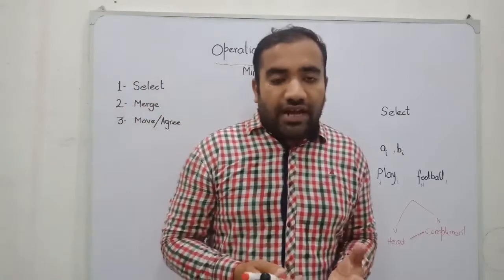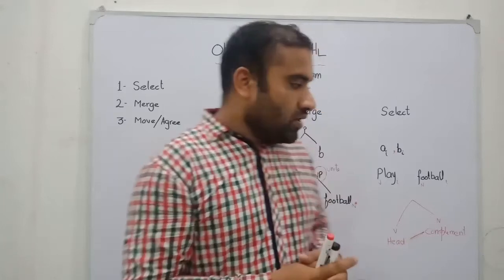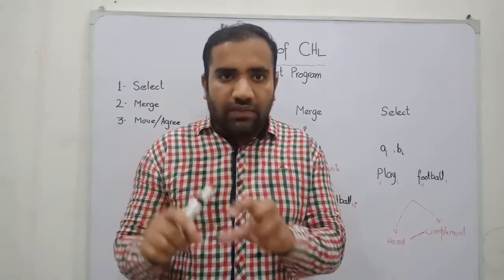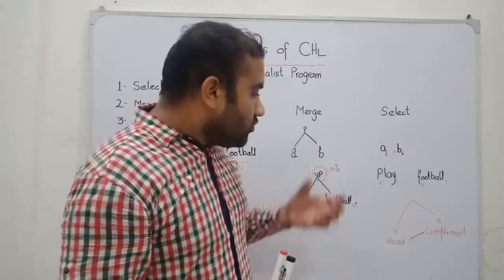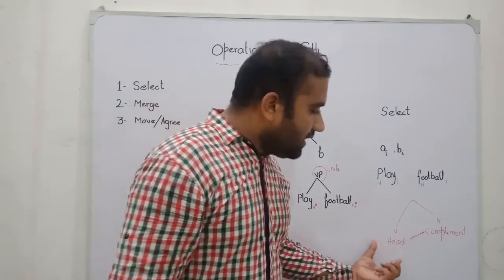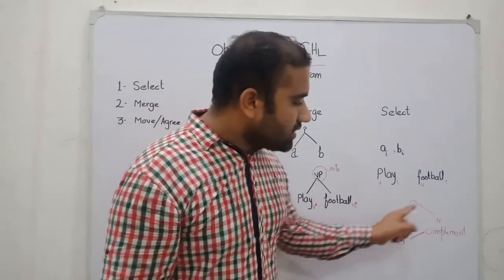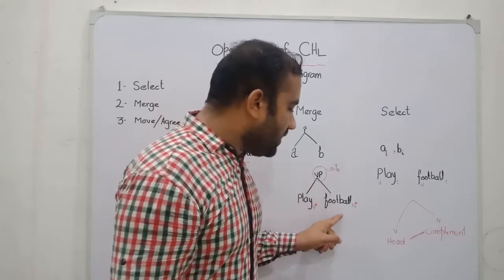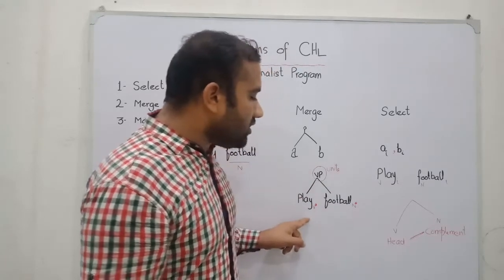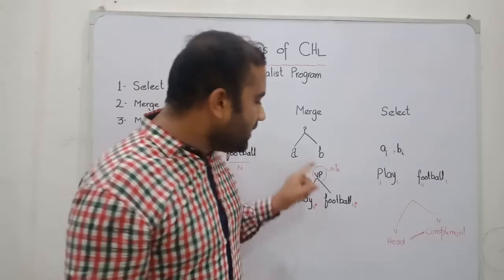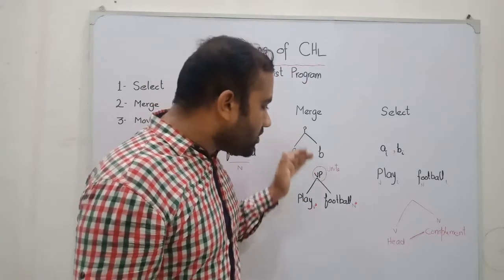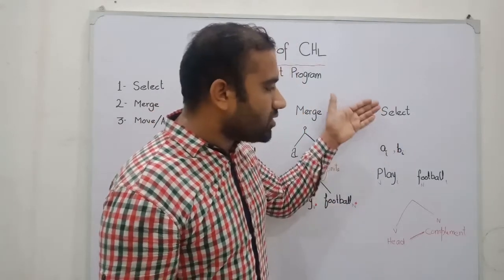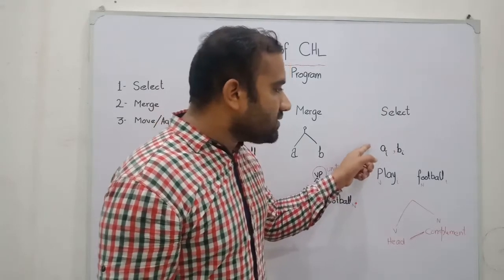The question is: how does the system merge the items? Chomsky said that when we look at X-bar theory, one word is the head and the next is the complement. The system recognizes a head-and-complement relation. The head takes the complement. In this frame, V is the head — 'play' — and it takes 'football' as a complement. In this way we construct the VP, which becomes a unit. This operation is called Operation Merge, and the previous one is called Operation Select.